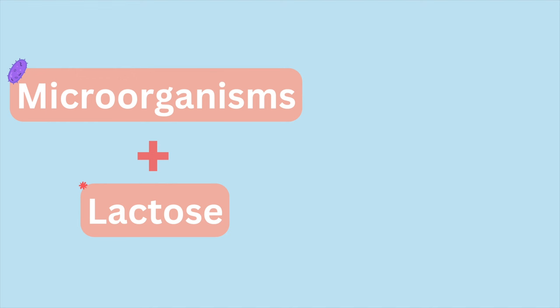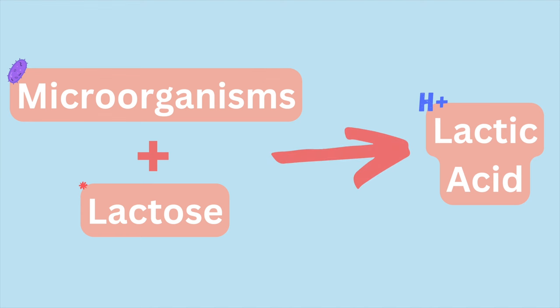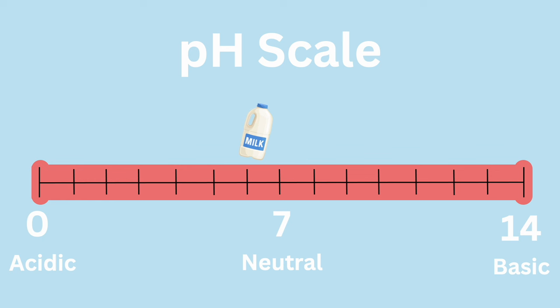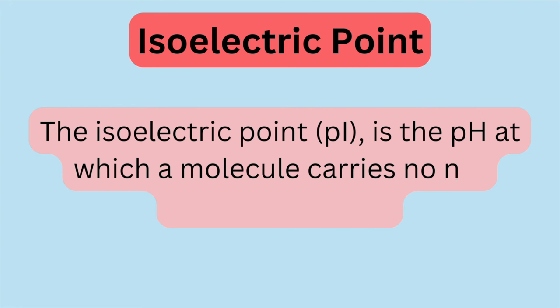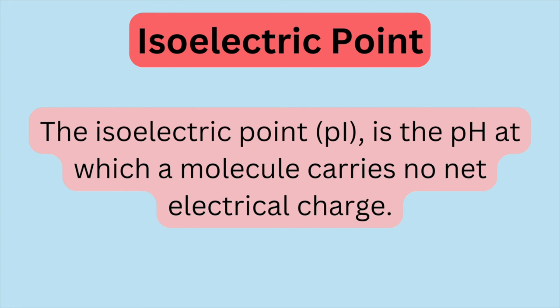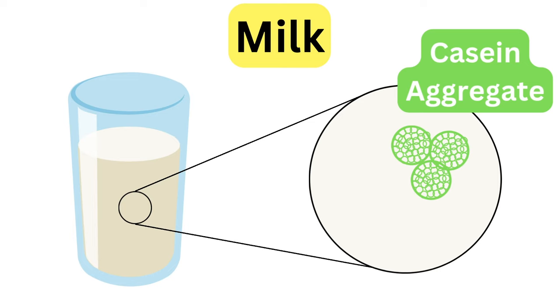The second thing happening is that the lactic acid bacteria start to consume lactose and produce lactic acid. As more acid is produced, the pH of the milk drops lower and lower, approaching the isoelectric point of casein. The isoelectric point is just a fancy term for the pH at which casein has no net charge. Remember, casein naturally has a negative charge, but at that lower pH those casein micelles become neutral, which also compels them to come together and form larger aggregates.